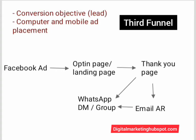You design your opt-in page or landing page and you have a thank you page. You send traffic to your landing page, and once they sign up or click the call-to-action button, it takes them to the thank you page where you thank them for signing up — for the free gift, ethical bribe, or whatever you promised them. On the thank you page, there will be a button for them to click to contact you on WhatsApp or join a WhatsApp group.